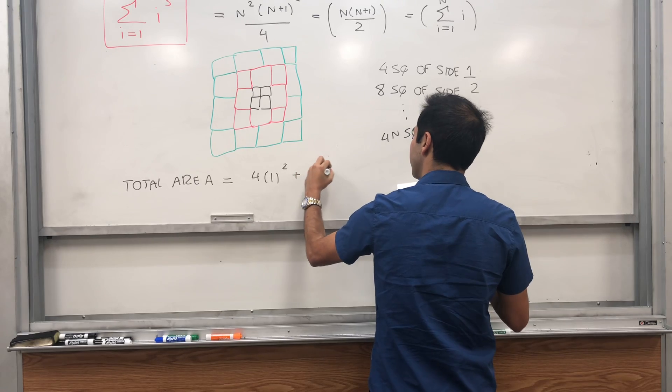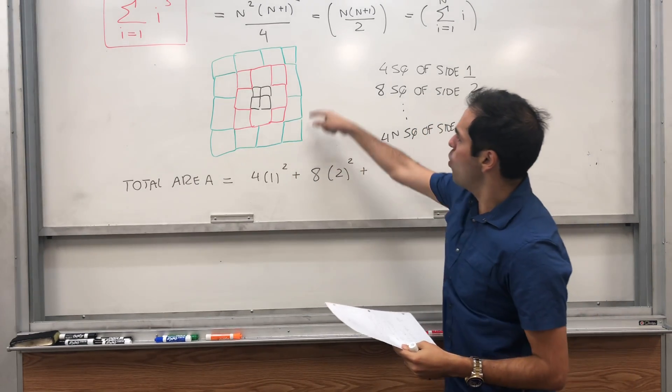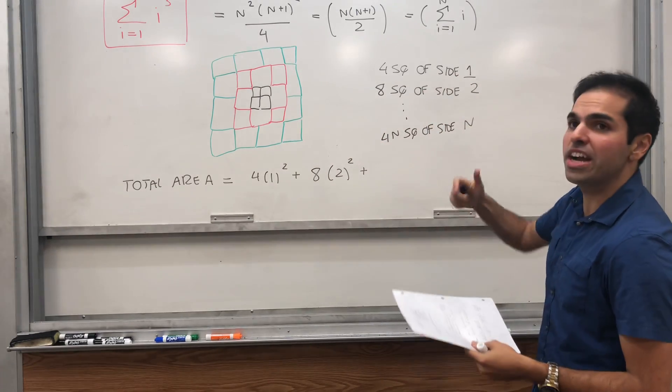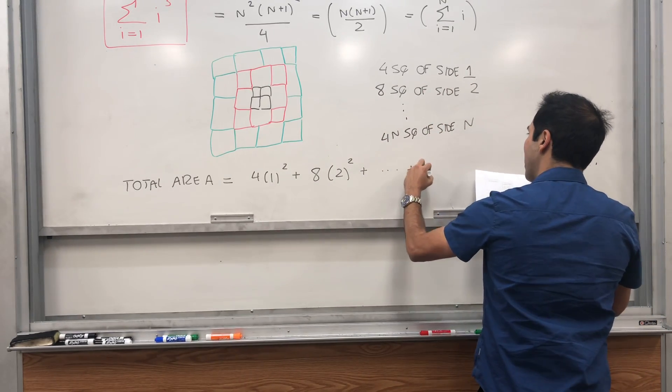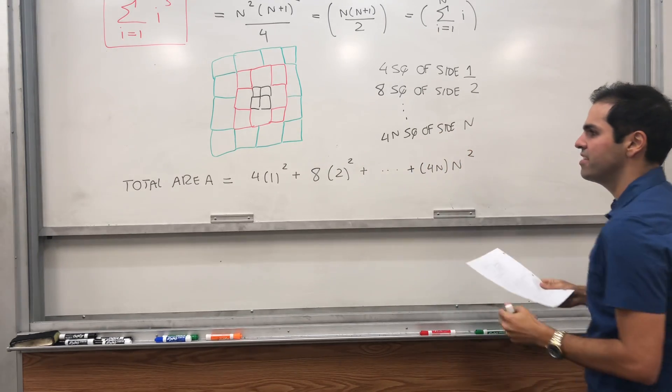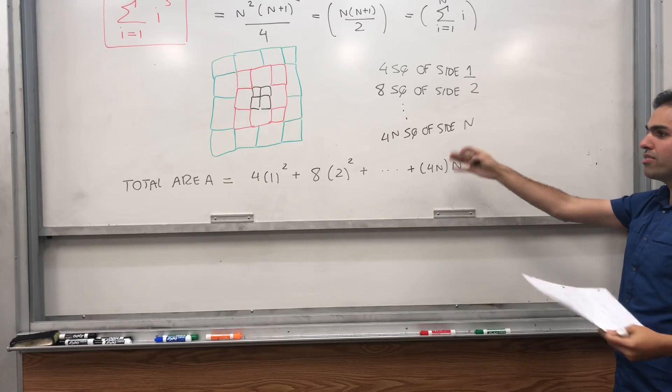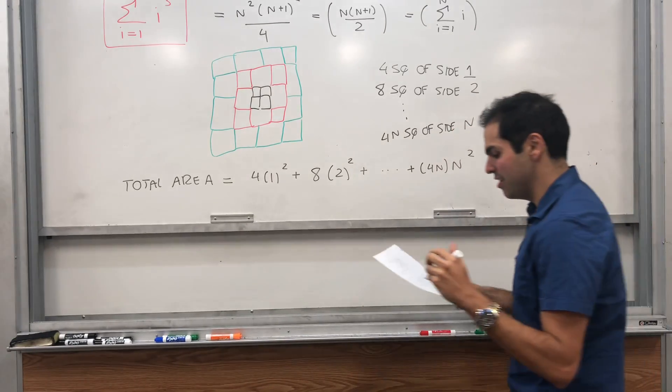And then you sum up the area of the red squares, which is 8 squares of side 2. So 8 times 2 squared. And then 12 times 3 squared, etc., until you get 4n squares of side n. This area is n squared. And it doesn't look like it's the sum of cubes, but let's manipulate this a little bit.